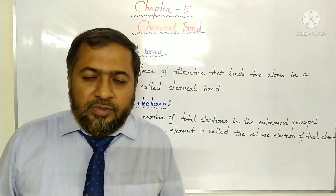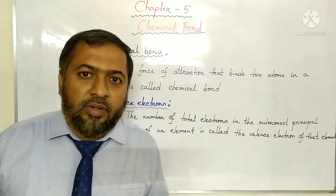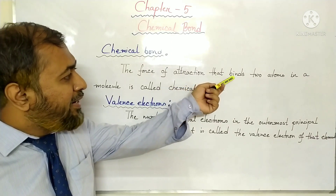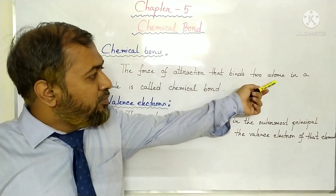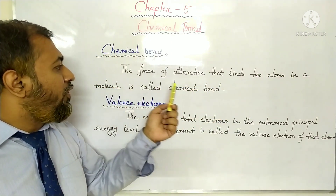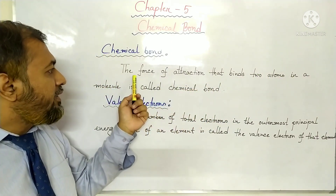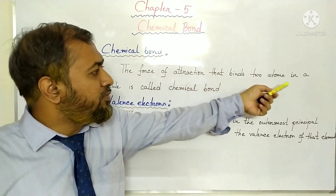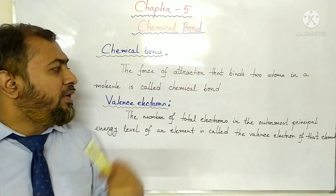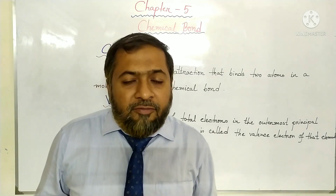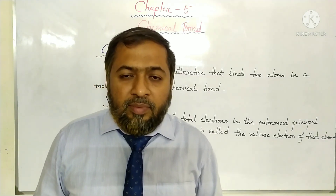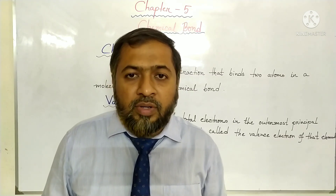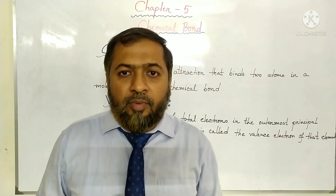Now students, what is actually a chemical bond? The force of attraction that binds two atoms in a molecule is called a chemical bond. There are different types of chemical bond — for example, ionic bond, covalent bond, and metallic bond. The process of forming different kinds of bonds is different.